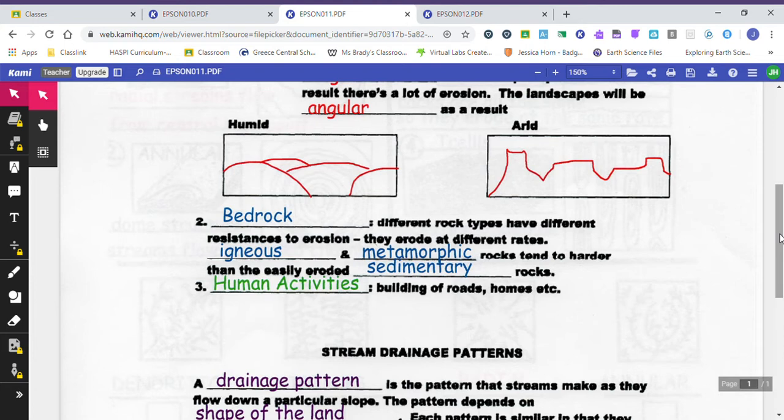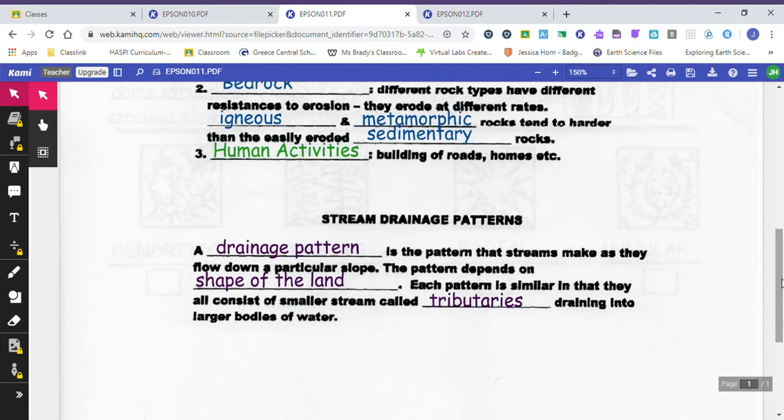Another activity that would result in different landscapes would be things that humans are doing. We are building roads and we're building houses and we're putting parking lots up. Those are all things that are changing the natural landscape of the earth. The last thing I want to talk about today are drainage patterns.